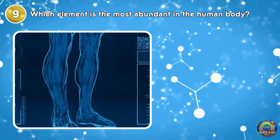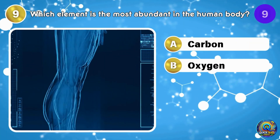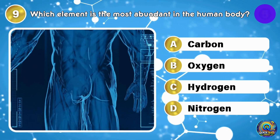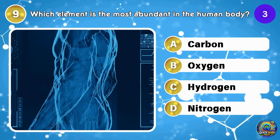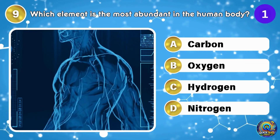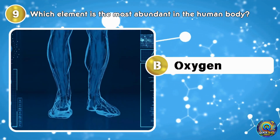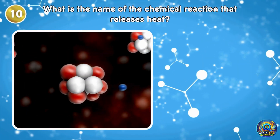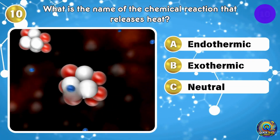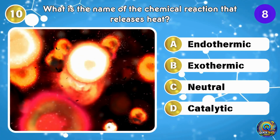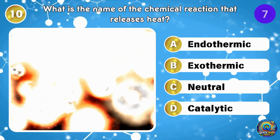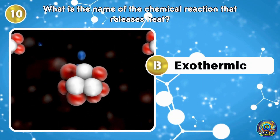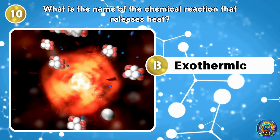Which element is the most abundant in the human body? The answer is oxygen — you're practically full of it. What is the name of the chemical reaction that releases heat? The answer is exothermic. Things are heating up with this one.